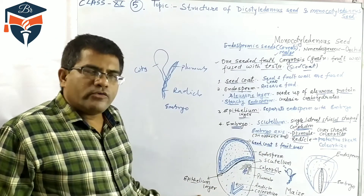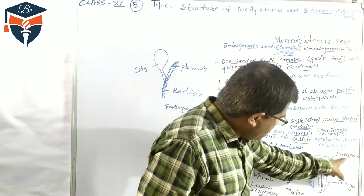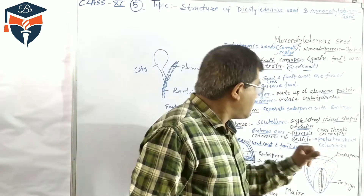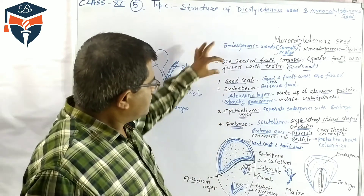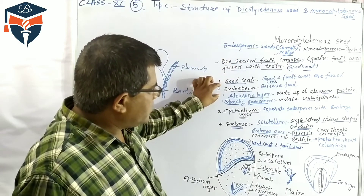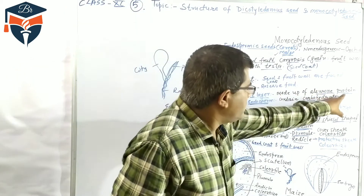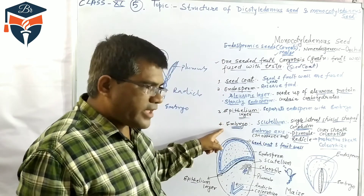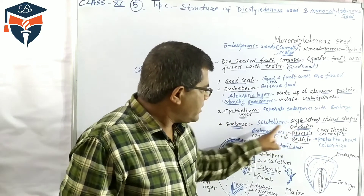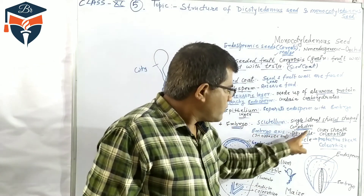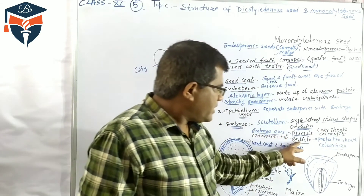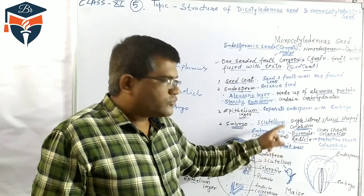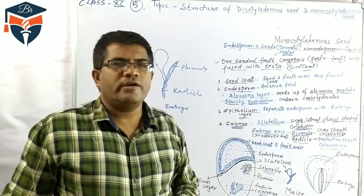This is the vertical longitudinal section of the maize seed. The two major parts are the endosperm and the embryo. The outermost layer is the seed coat; below it is the endosperm which stores food, consisting of the aleurone layer and the starchy endosperm. The epithelium separates the endospermic part from the embryo part. Each embryo has a single cotyledon called the scutellum, the embryo axis with plumule and radicle at opposite ends, coleoptile covering the plumule, and coleorhiza covering the radicle.